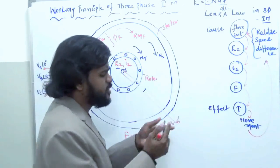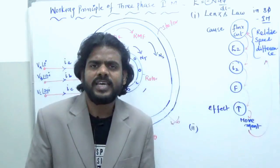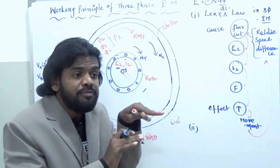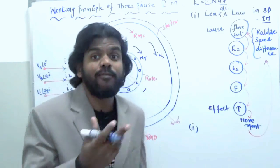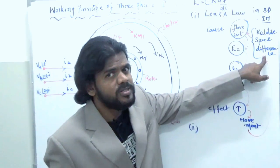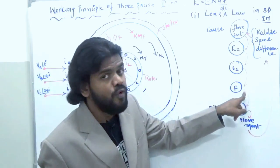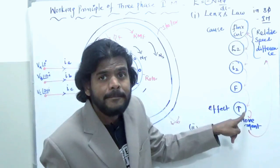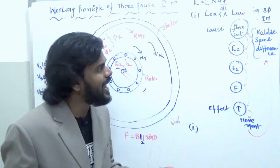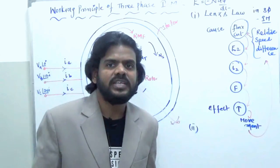Because of Lenz's law, NR is always in the direction of NS. Now the second point: what happens if the rotor is running in the same direction as the stator flux and the rotor catches the speed of the stator flux? Then what happens? The relative speed difference will be zero because NS equals NR, so there is no speed difference, no flux cut, no EMF, no I2 in the rotor, no force on the rotor conductors, and no torque.